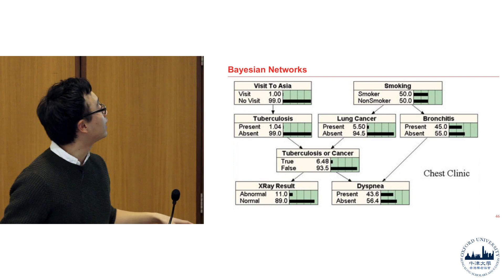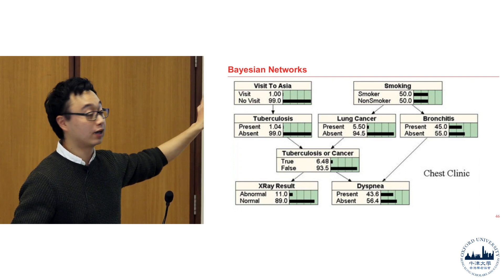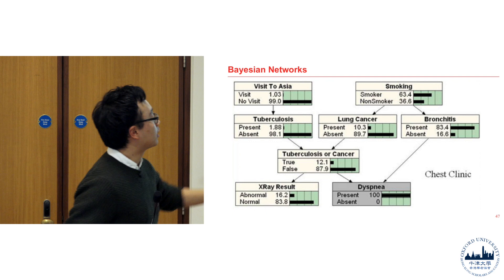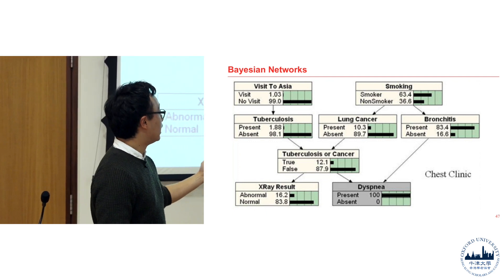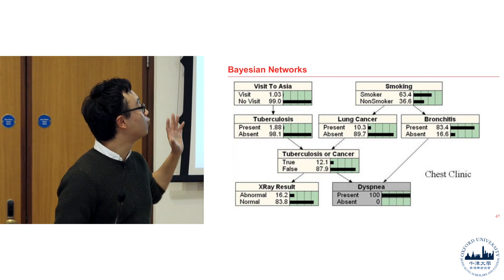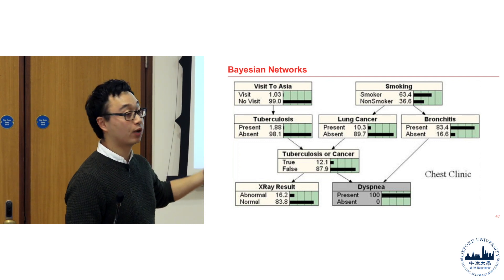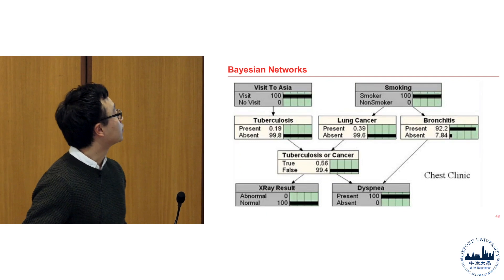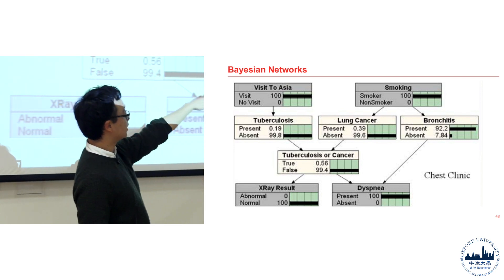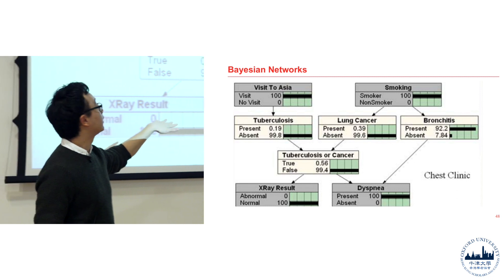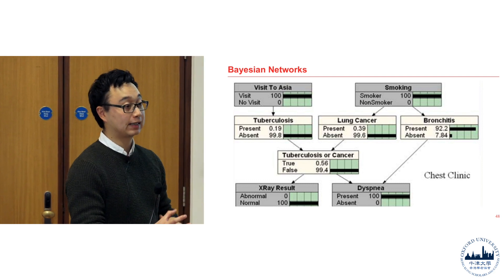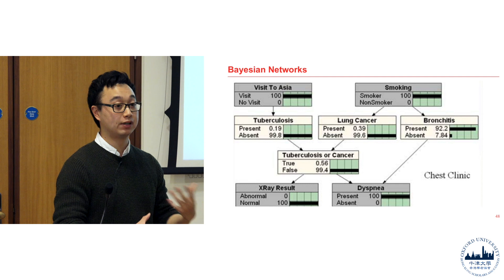You can have observations in your Bayesian network. Say a patient comes in with dyspnea — you mark dyspnea as present, and then you can see how all the other probabilities update across the whole network. From that you can see whether they have bronchitis or lung cancer. Adding more observations — say they went to Asia, are smoking, and have an x-ray — you can determine that bronchitis is present and lung cancer is 99% absent.